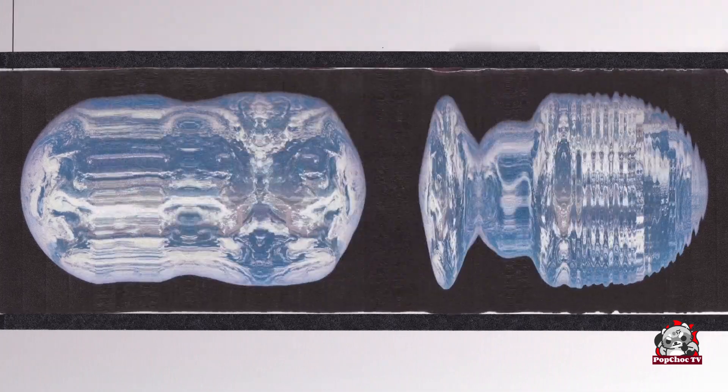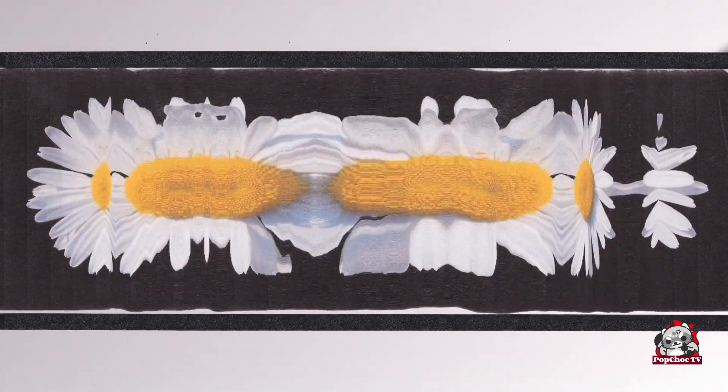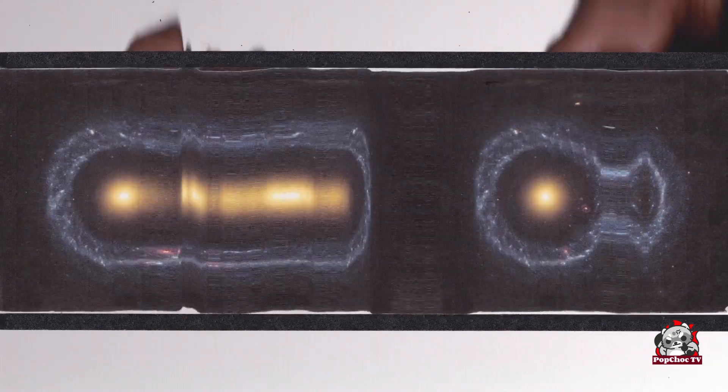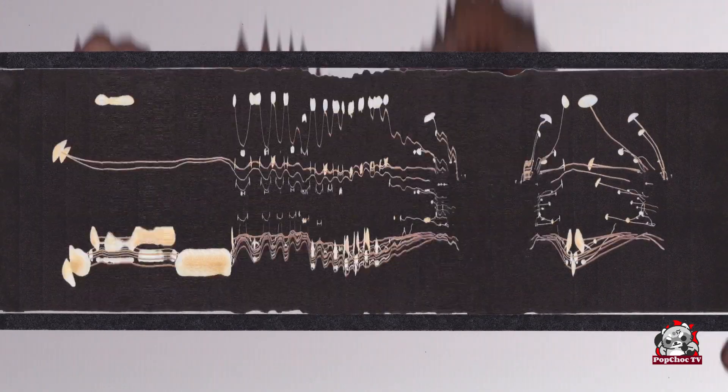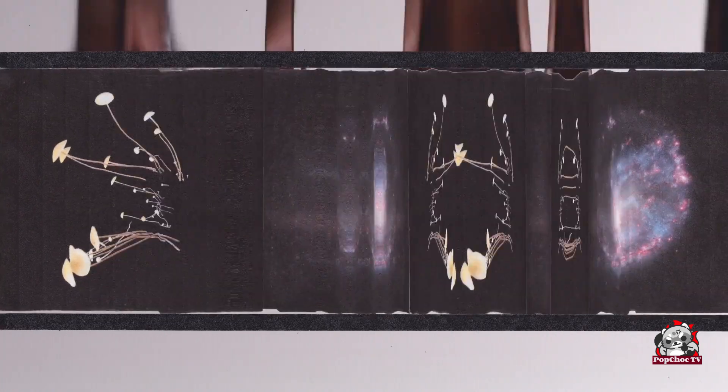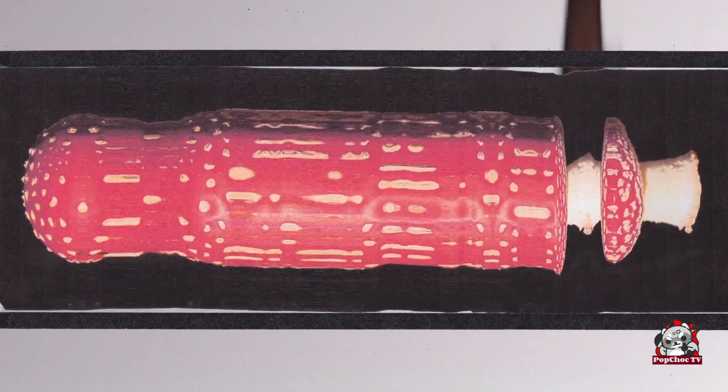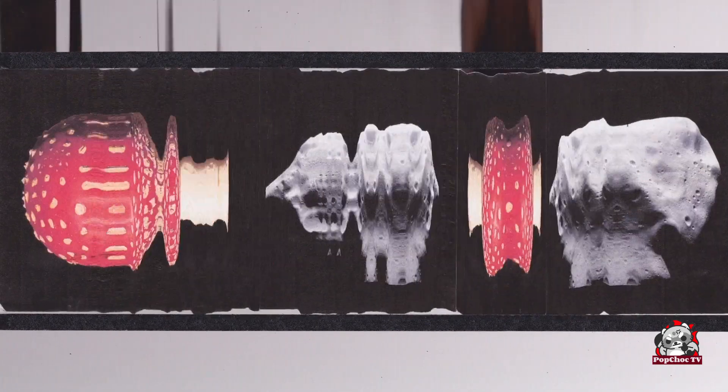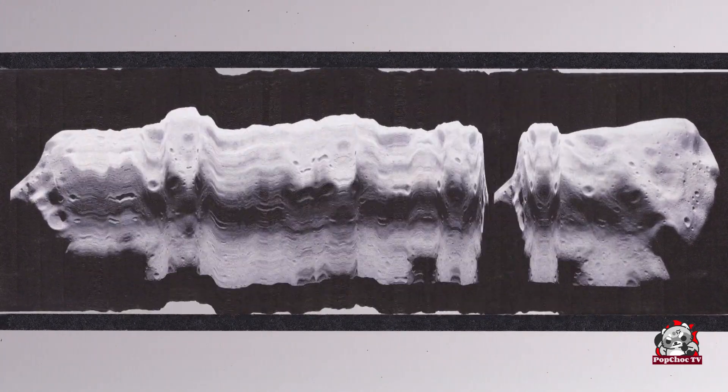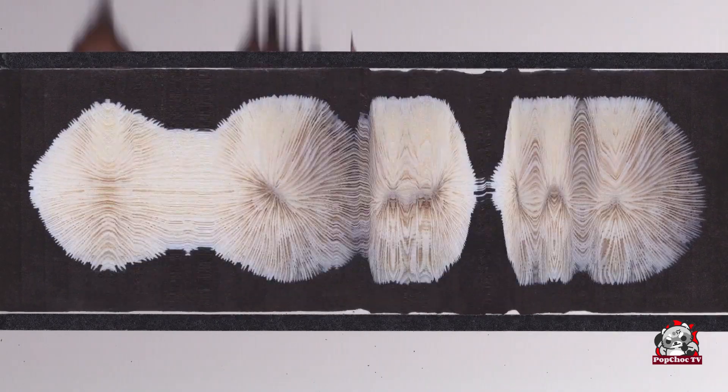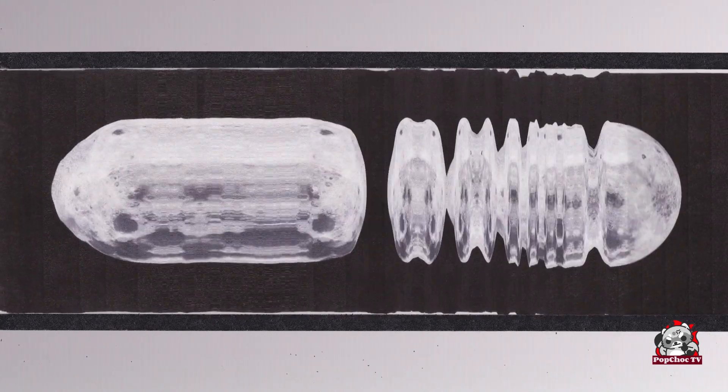At number nine, we have the detection of gravitational waves. In 2016, scientists made history by directly observing gravitational waves for the first time. These ripples in spacetime, first predicted by Albert Einstein, are caused by the acceleration of massive objects like colliding black holes. This monumental discovery has opened a new window into the universe, allowing us to explore the cosmos in ways never before possible.